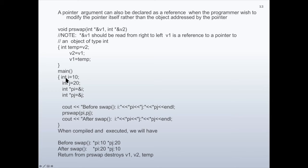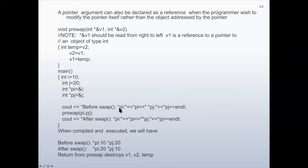In the main part, integer i is initialized to 10, integer j is initialized to 20. Pointer pi contains the address of i, and pj is a pointer containing the address of j. The output before the swap prints: the content of the item pointed by pi — which is 10 — and the content of the item pointed by pj — which is 20.